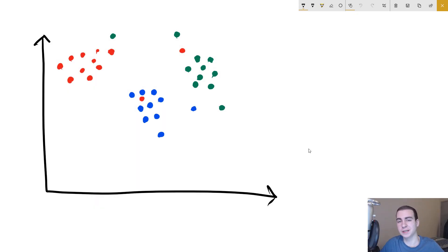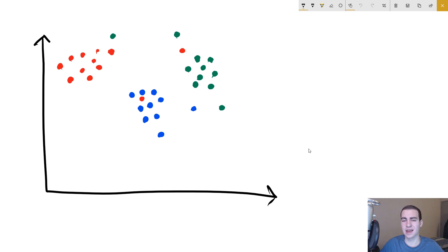Hello and welcome back to another machine learning tutorial. In today's video we're going to be implementing the k-nearest neighbors algorithm, but before we do that I'm going to talk about exactly how it works mathematically. If you're interested in the code, you can look at the text-based version at techwithtim.net, or skip forward in the video to when I'm done drawing.